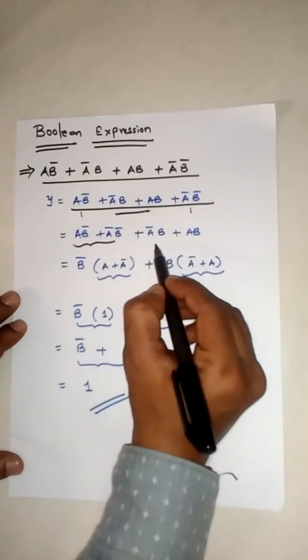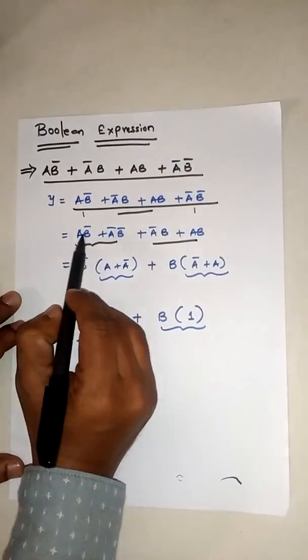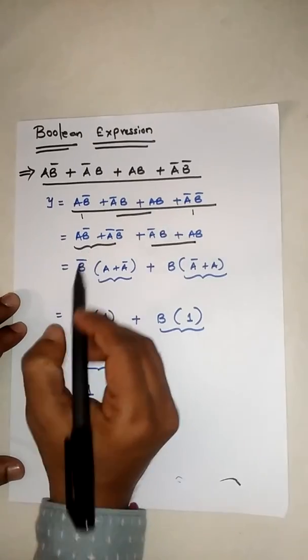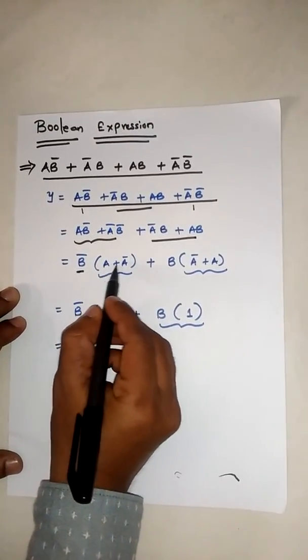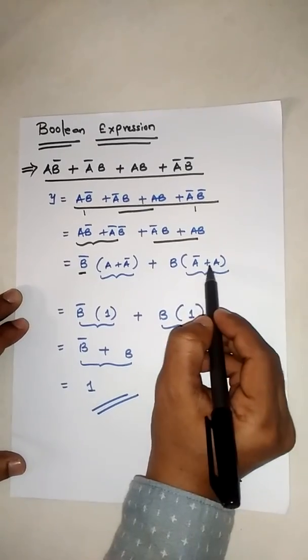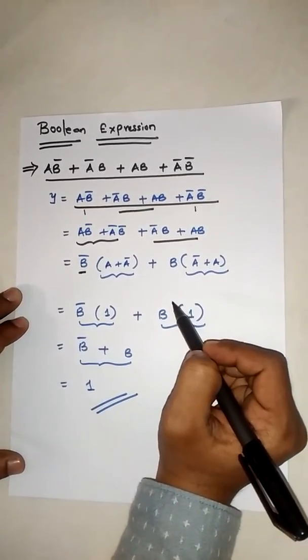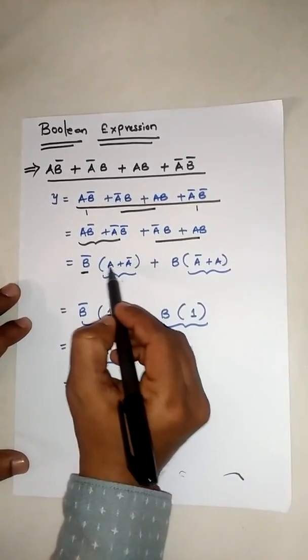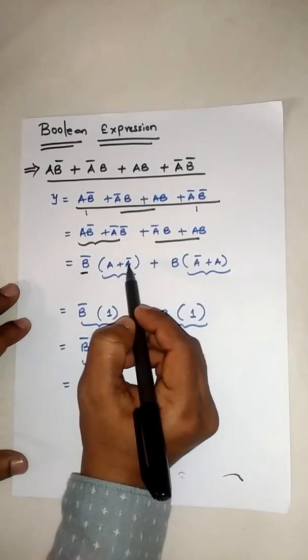In this, B̄ is common, inside the bracket A + Ā. In this, B is common, inside the bracket Ā + A. So now A + Ā, that is the OR law.